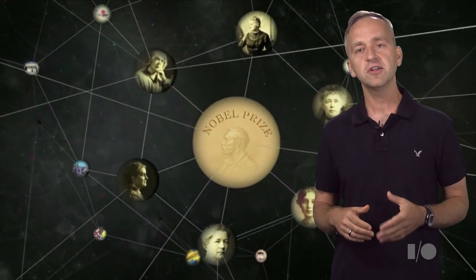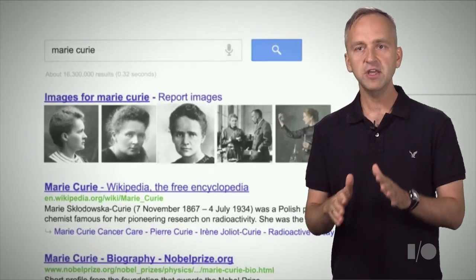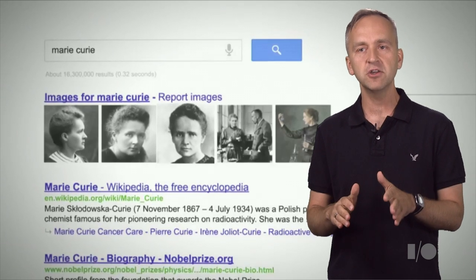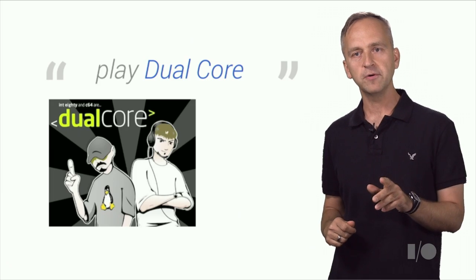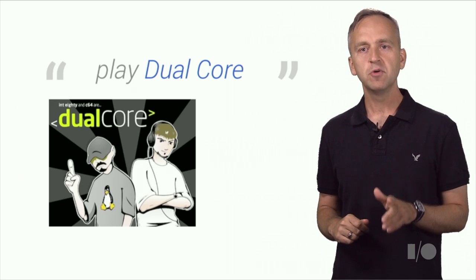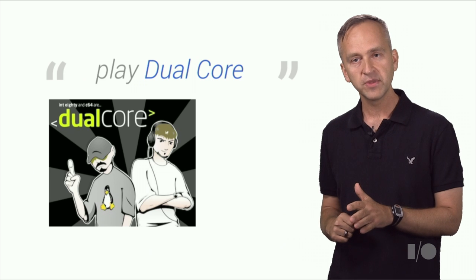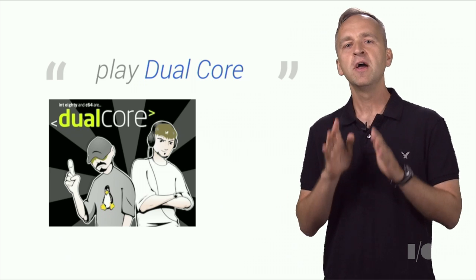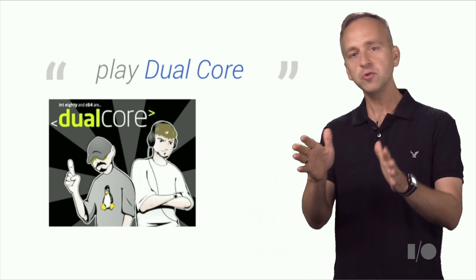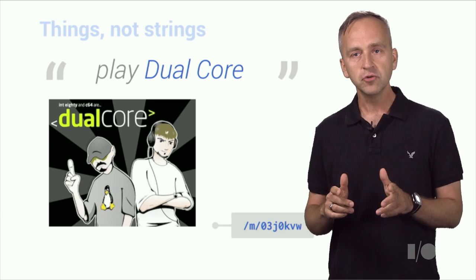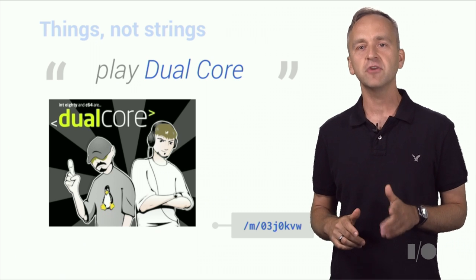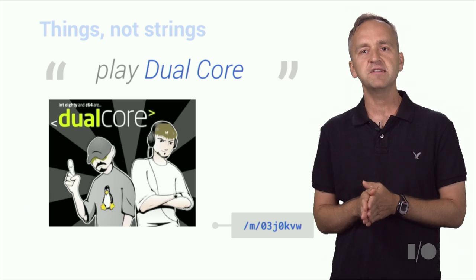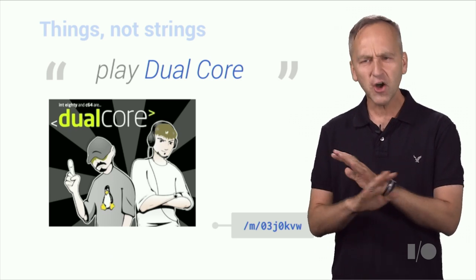At Google, we have been working on organizing the world's information to make it universally accessible and useful. To help with that, we've built the knowledge graph. The knowledge graph contains information about entities and their relationships. One of the interesting applications of the knowledge graph is resolving ambiguities when processing language queries. For example, the artist Dual Core is a band, which is different than the concept of dual core. As far as the strings are concerned, these two are equal, but to a user who is asking their phone to play Dual Core, the difference is quite clear. Dual Core the band is assigned a machine ID in the graph.